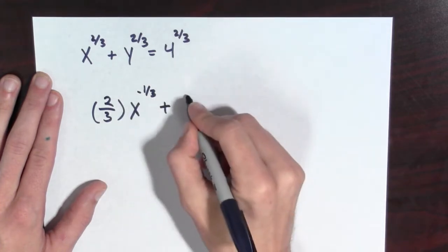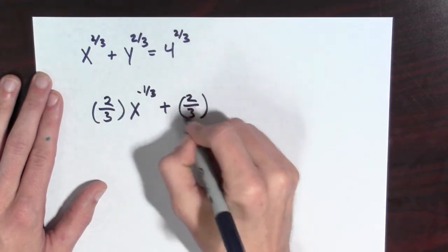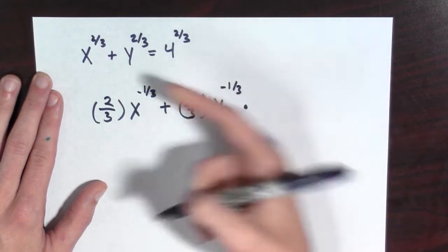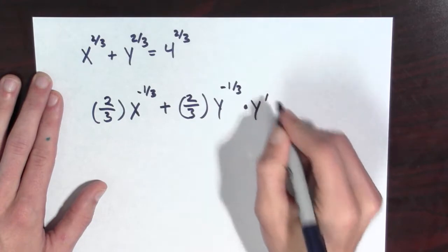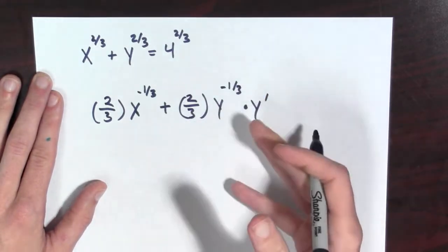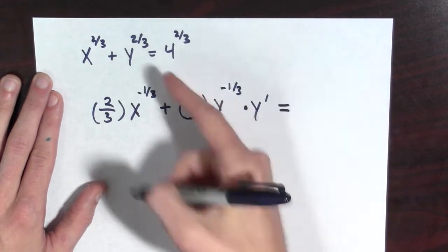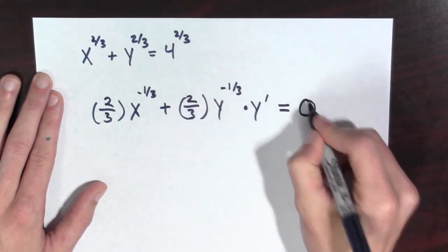And for y here we're going to have to use the chain rule, but we're going to start by using the power rule. So (2/3)y^(-1/3) and then multiply by y'. This is the chain rule. I'm assuming implicitly that y is a function of x, and this equals zero, since the derivative of a constant is zero.